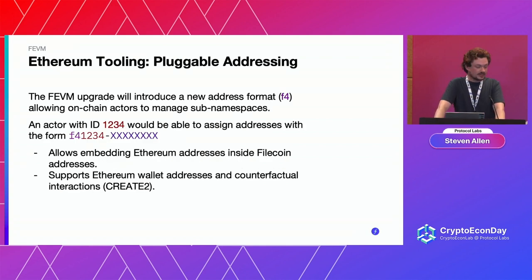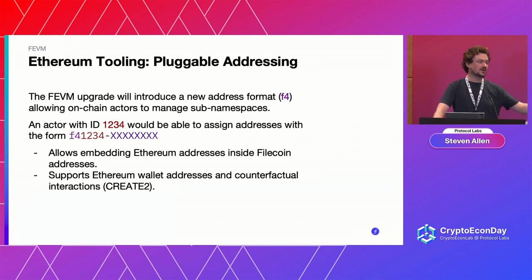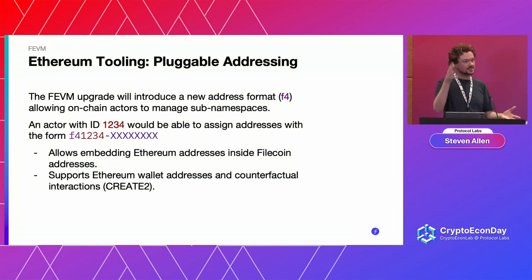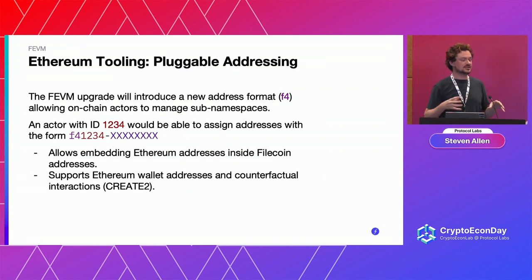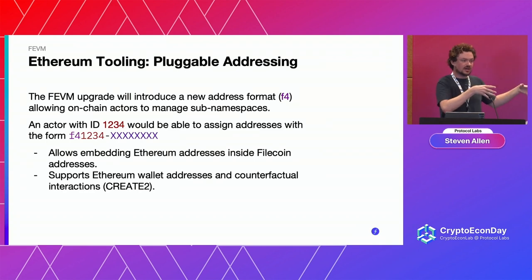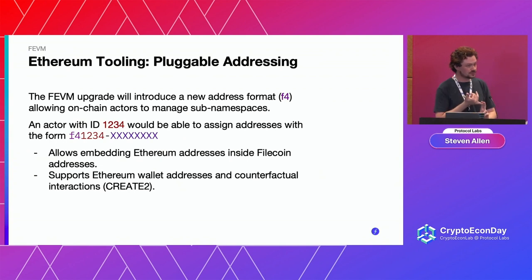One key part here is pluggable addressing. We're adding the ability to add custom addressing schemes managed by actors to the Filecoin chain. In M2.2, you'll be able to deploy a custom actor that will control an entire sub-namespace in the addressing scheme. For example, if you have an actor at ID address 1234, you will control everything under F4-1234-dash-whatever-you-want. This allows you to take an addressing scheme from some other blockchain and port it right in, keeping the addressing format so everything continues to work with your tooling. It also supports Ethereum counterfactuals and Ethereum accounts with the same address formats.